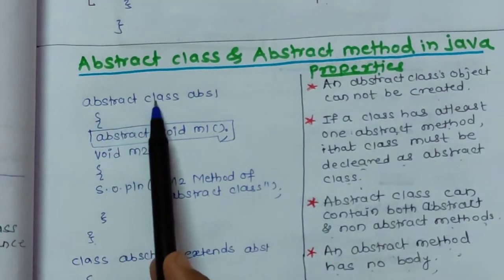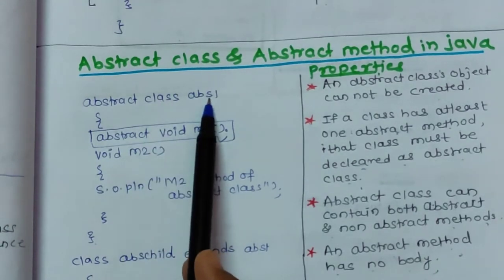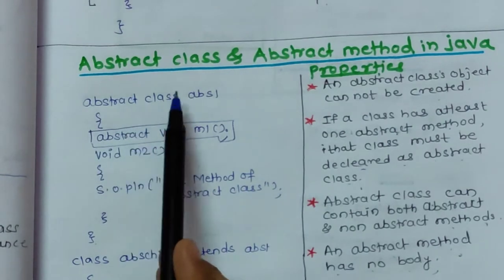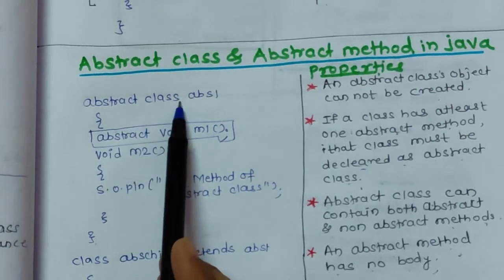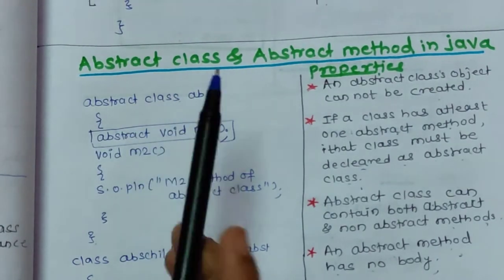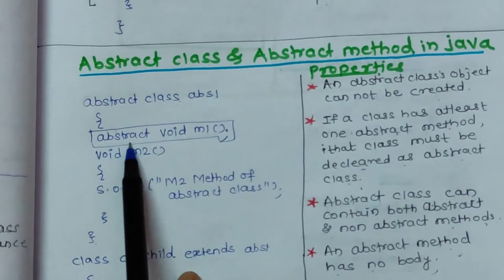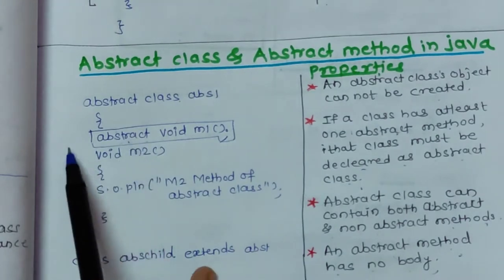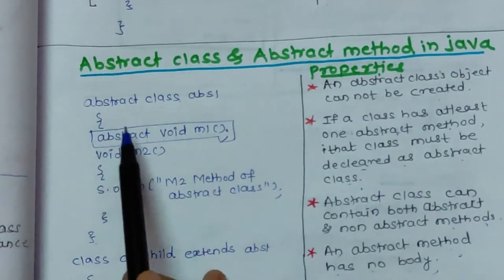This is an abstract class. How is it abstract? If we are writing the keyword abstract before a class, we can call it an abstract class. Abstract class can have abstract methods, or if there is an abstract method in the class, we have to define that class as abstract.